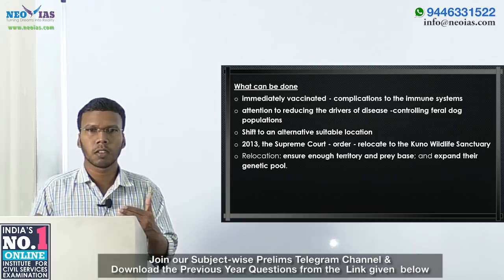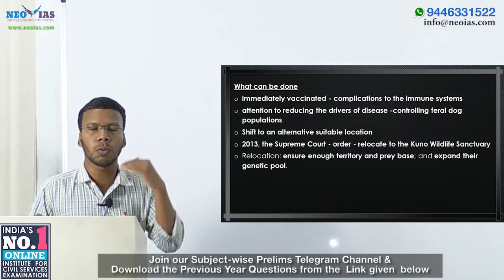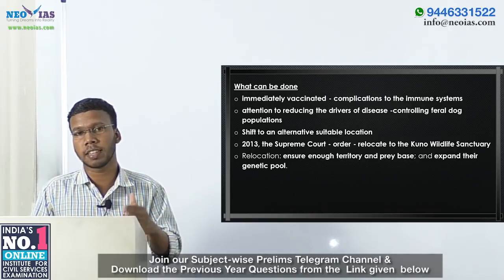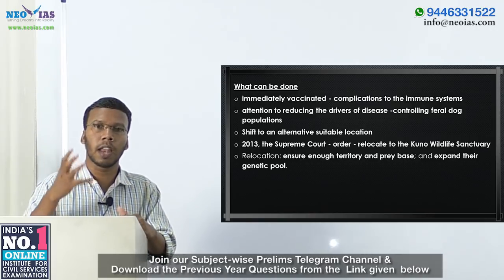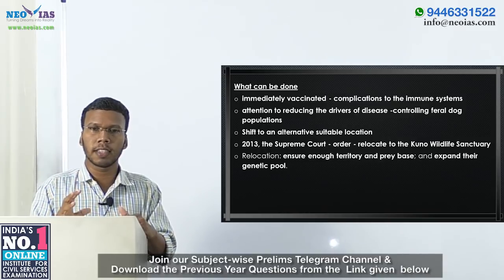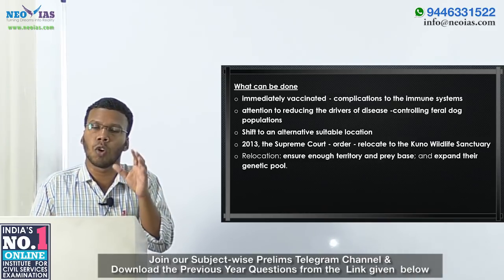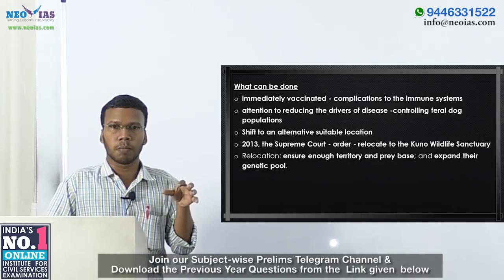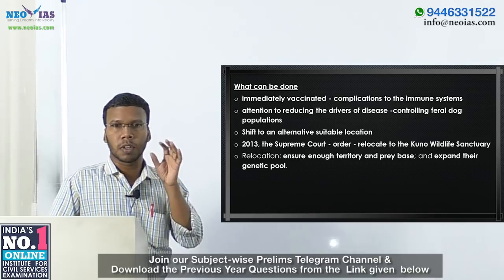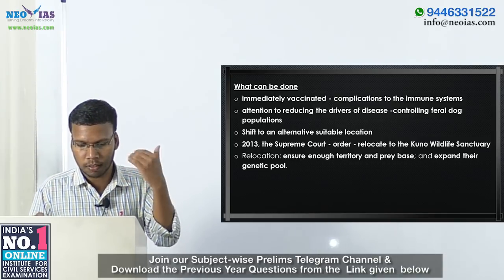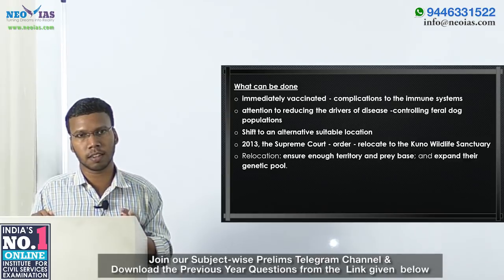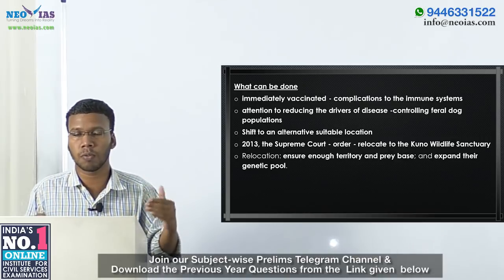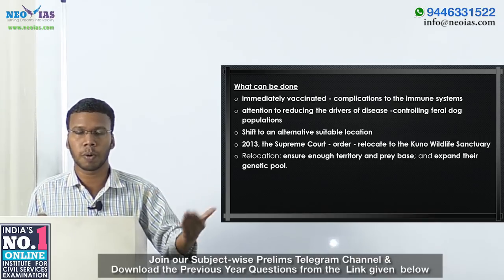However, there are concerns about transferring Gir lions to Kuno Palpur, because Kuno Palpur has fast-moving animals, while the lions of Gir National Park are adapted to large, slow-moving animals like domestic cattle. This adaptation difference is a significant concern over the proposed transfer.